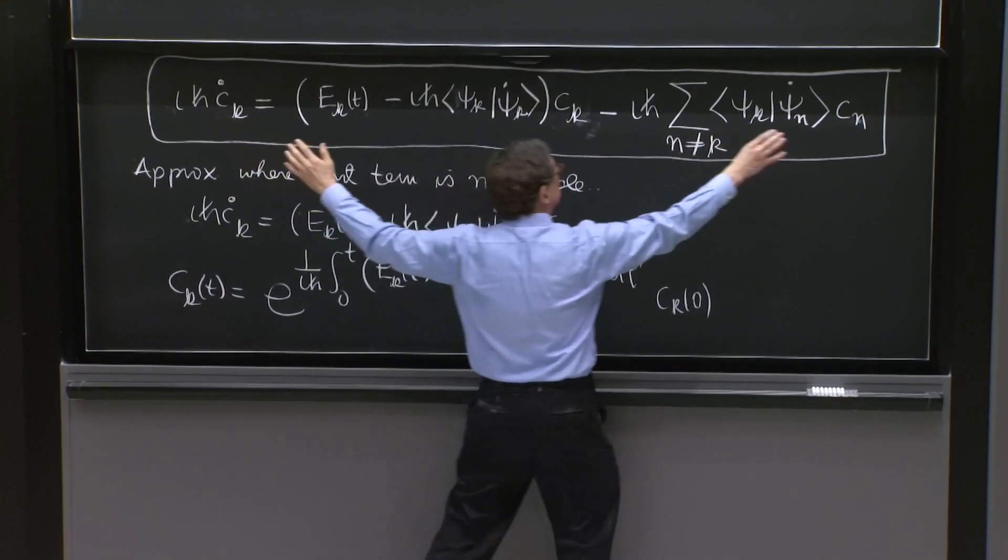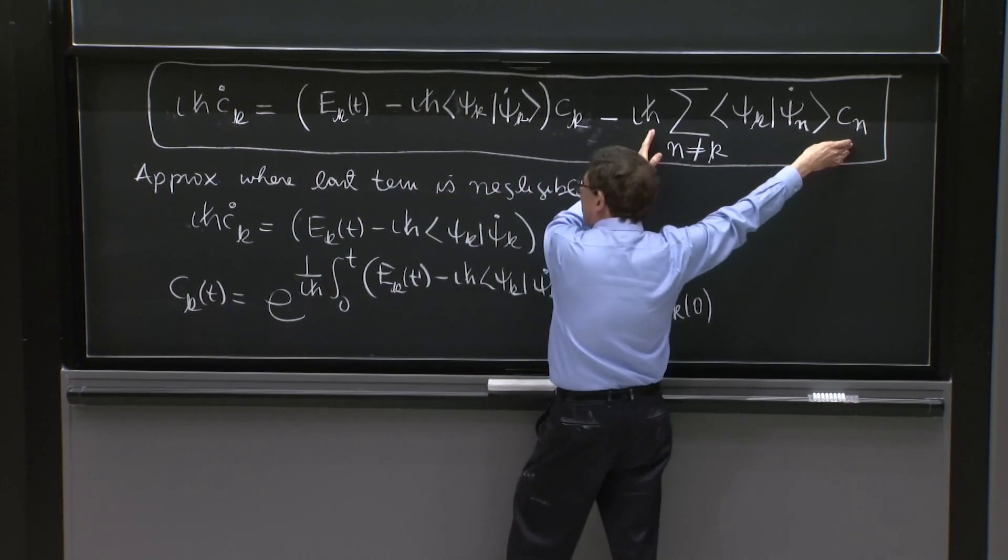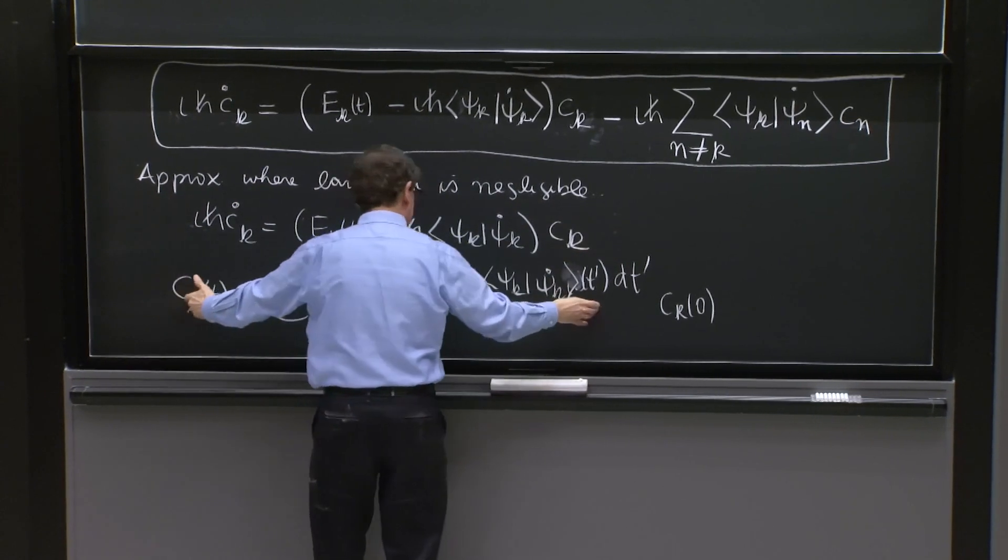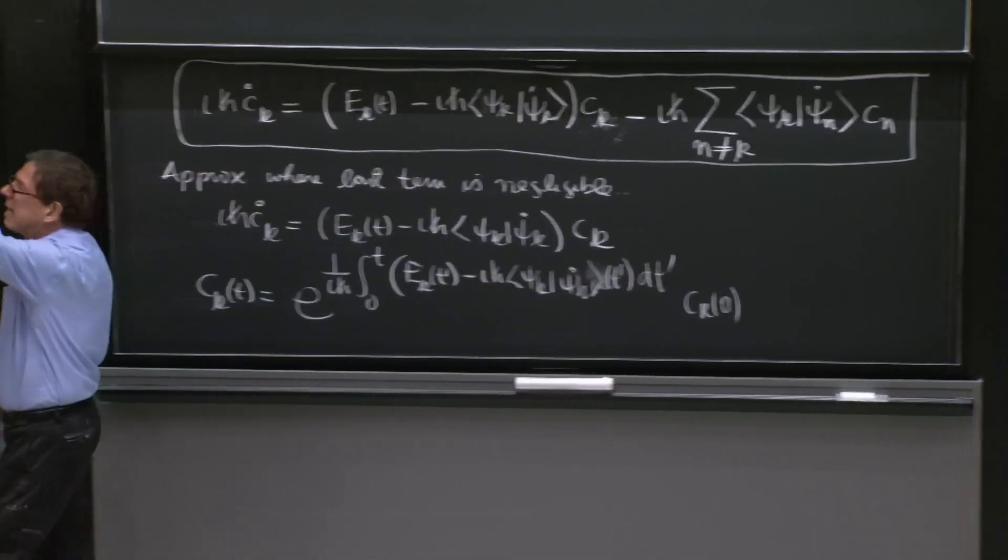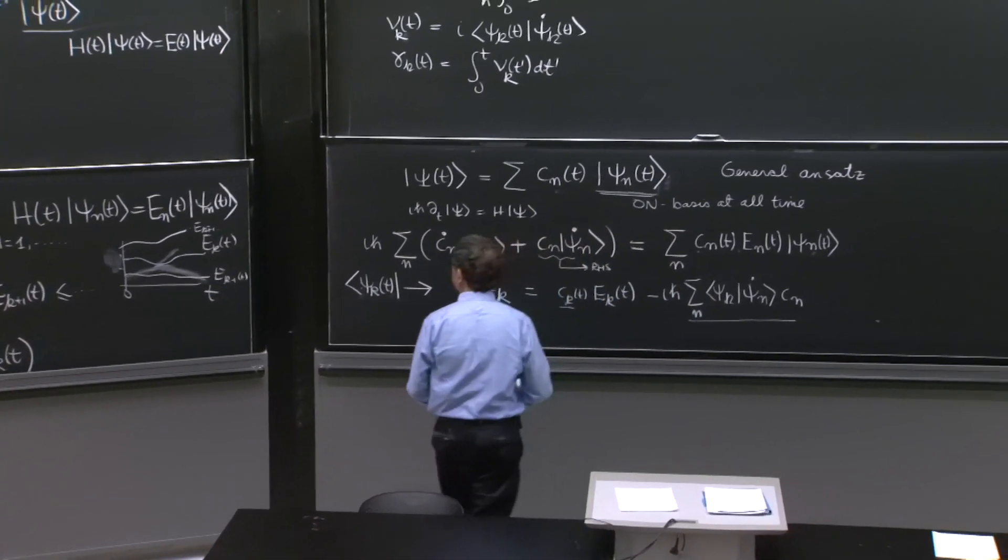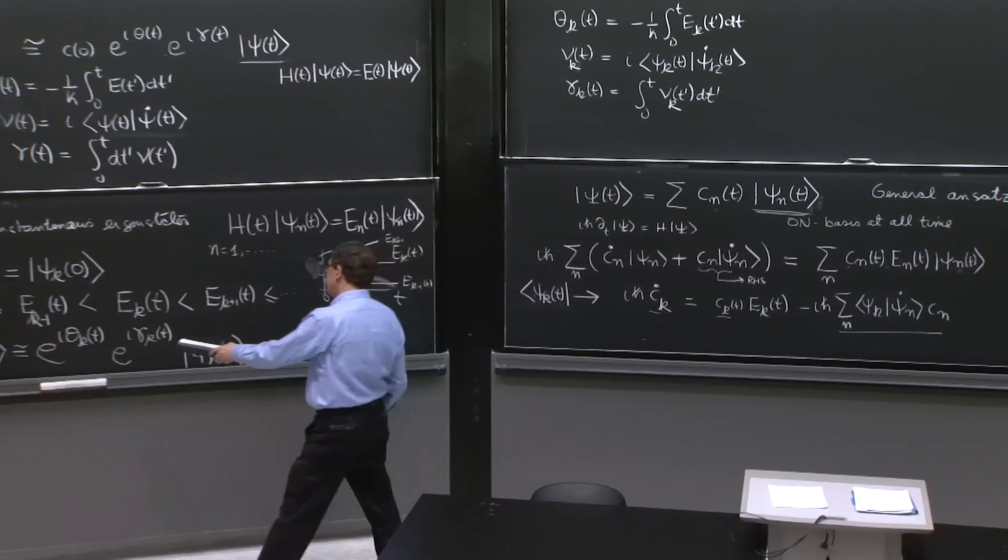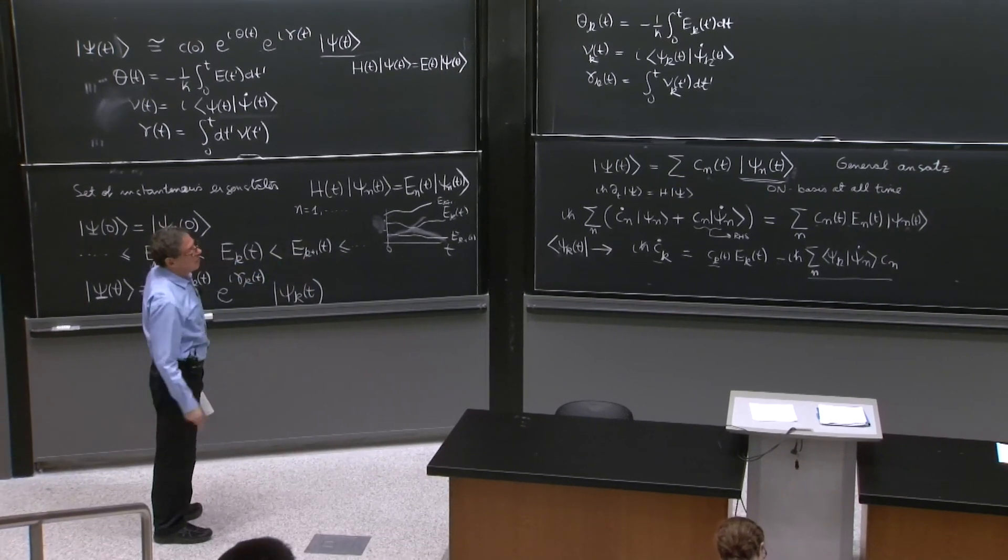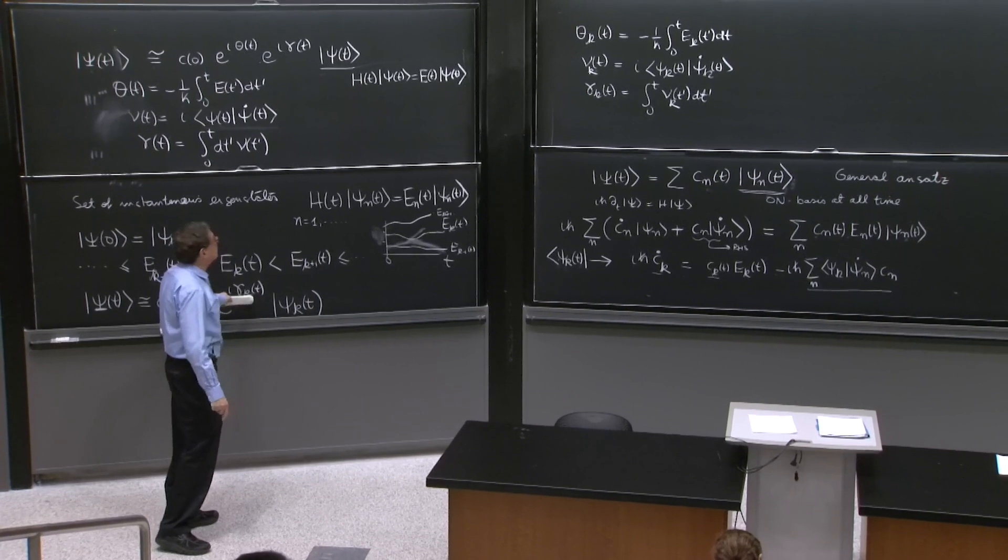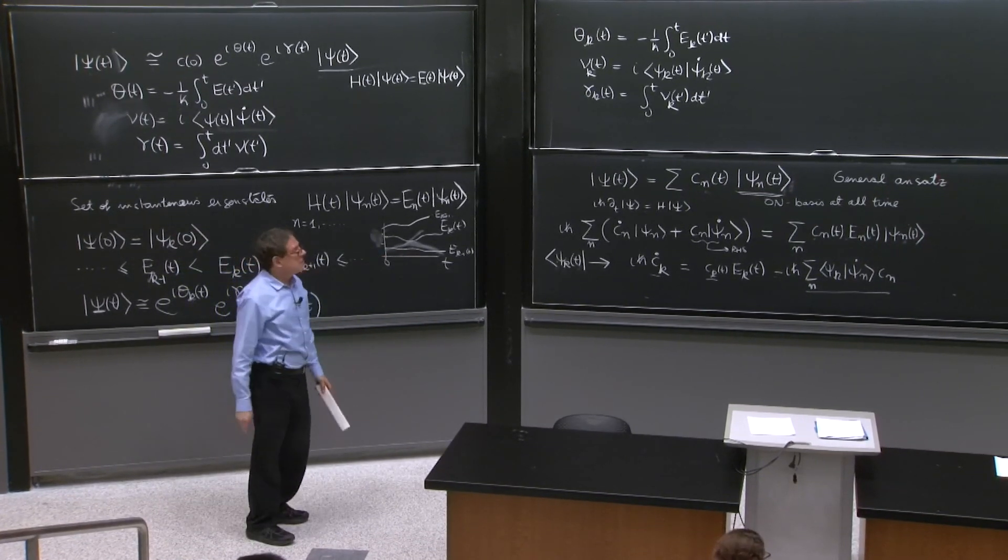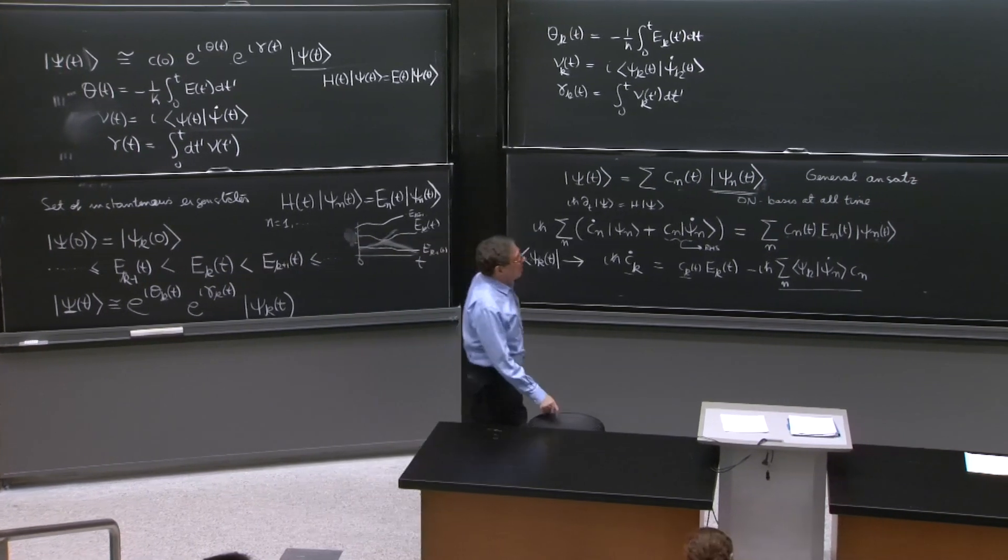So last time we said we ignored possible couplings between the different modes represented by this term, and we just solved this equation which gave us this, which is exactly what we've been writing here. E to the i theta of k comes from the first term on that integral, and e to the i gamma of k comes from the second term on that integral. These are the same things.